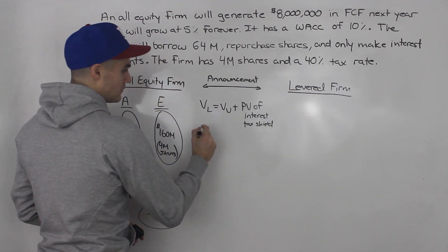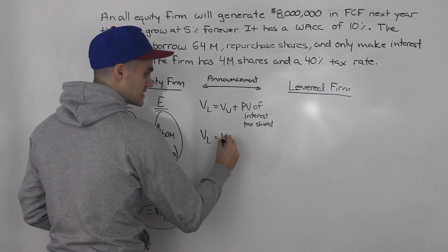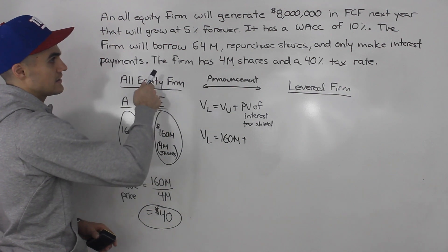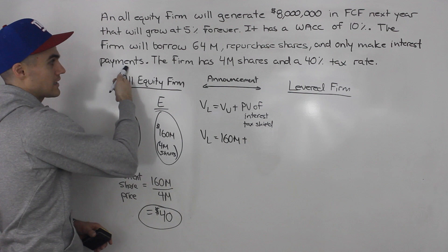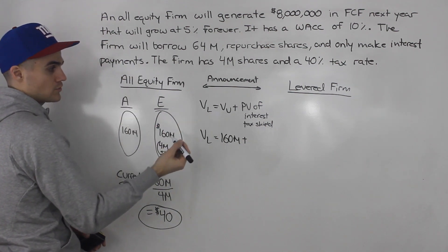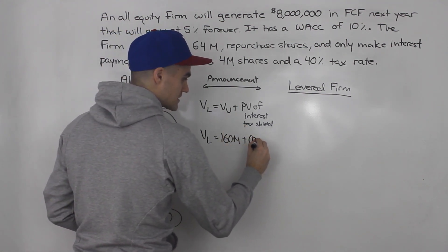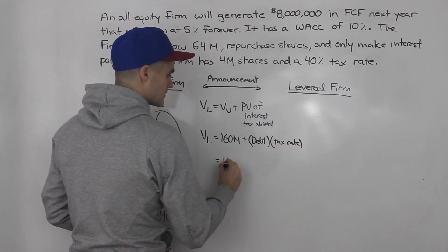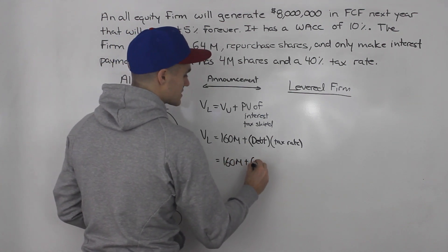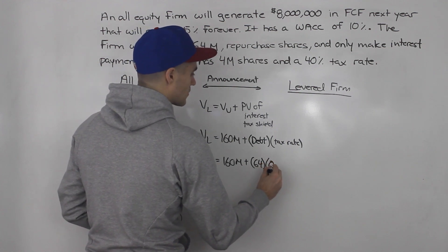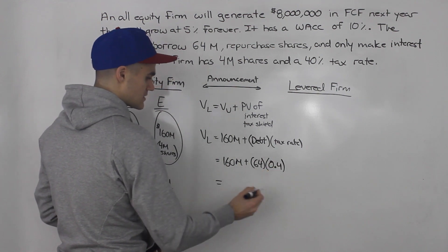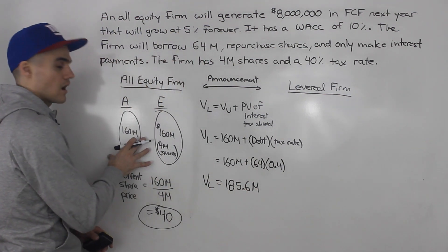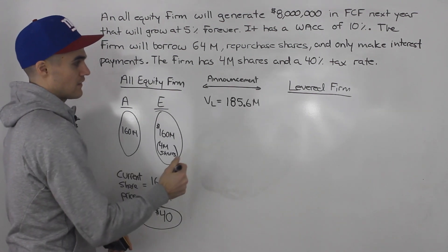The value of the levered firm is therefore the value of the unlevered firm — $160 million — plus the present value of the interest tax shield. Because the firm will only make interest payments, the debt is permanent, so the present value of the tax shield is debt times the tax rate: $64 million × 0.4 = $25.6 million. The levered firm value is therefore $185.6 million.